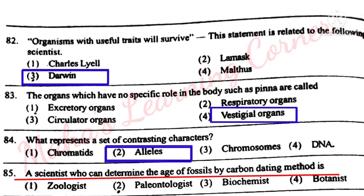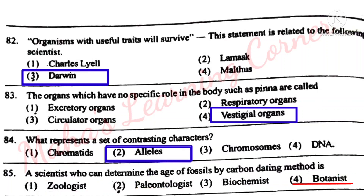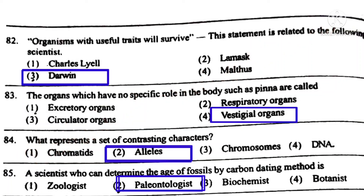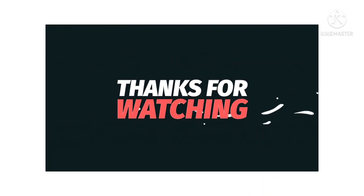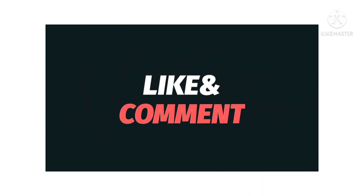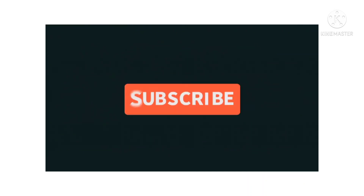A scientist who can determine the age of fossils by carbon dating method is which of the following? Options: Zoologist, Paleontologist, Biochemist, Botanist. Correct answer: Option 2 – Paleontologist. Thank you.